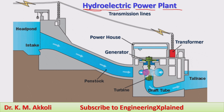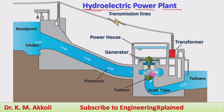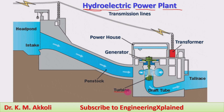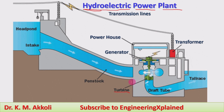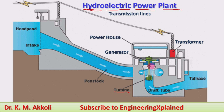The flowing water, due to its kinetic energy, hits the blades of the turbine and the turbine starts rotating, converting kinetic energy into mechanical energy. The turbine is a device which converts the kinetic energy of flowing water into mechanical energy — specifically rotary shaft energy.